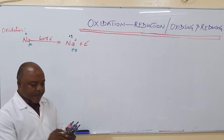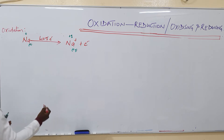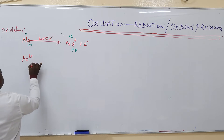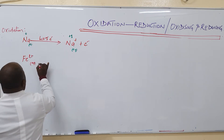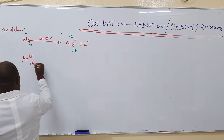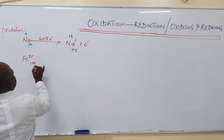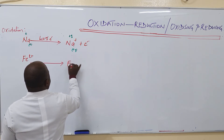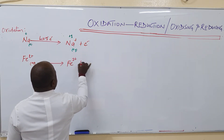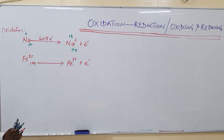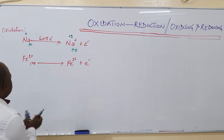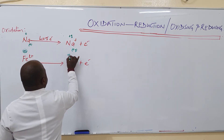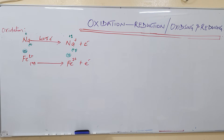Another example could be in terms of ions. We can say iron 2 plus loses an electron — an electron has been lost. The oxidation number of iron goes from plus 2 to plus 3. That is loss of electrons.